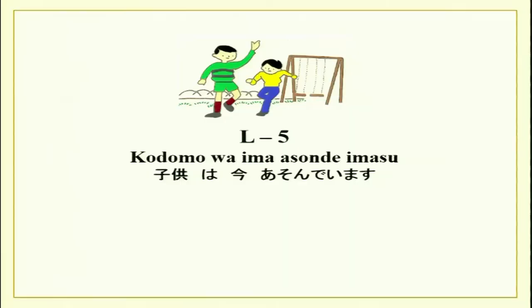Last week we did adjectives and the various forms and conjugations of adjectives, and we also did the tai form of the verb, which says 'I want to do' what the verb is saying. So today we are going to do the te imasu form of the verb, which is equivalent to the -ing or continuous tense in English.